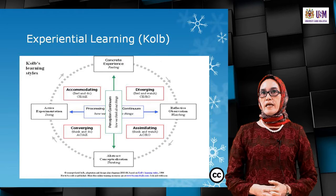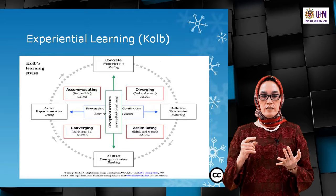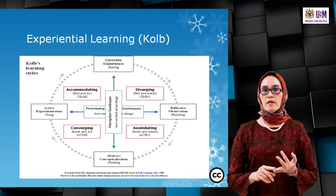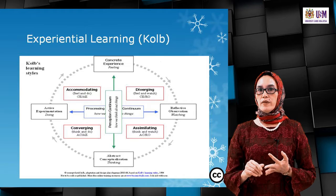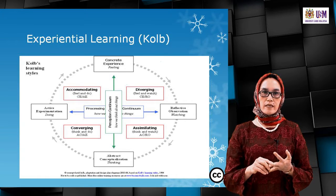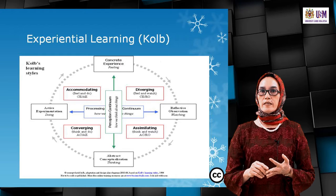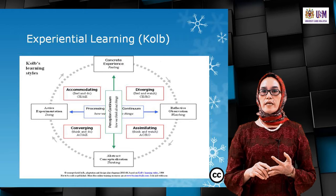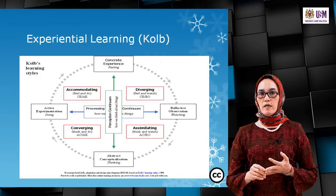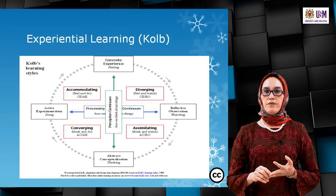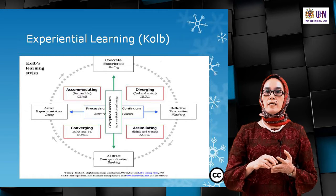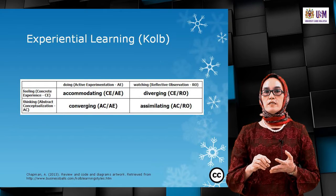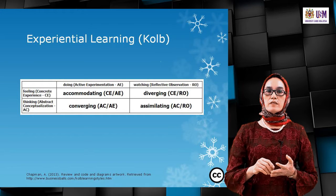In learning theories, besides motivation and Maslow's hierarchy of needs, we also need to know about learning styles. Kolb's experiential learning styles are divided into four stages based on two dimensions: concrete versus abstract, and active versus reflective. From these come four styles: accommodating versus diverging, and assimilating versus converging.